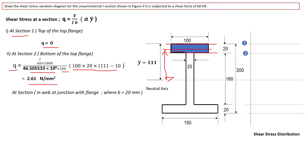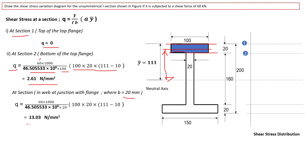Just below the flange, in the web portion, the width changes to 20 mm. With the same area moment but using B = 20 mm, the shear stress at the top of the web (just below the flange junction) comes out to be 13.03 N/mm².